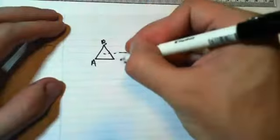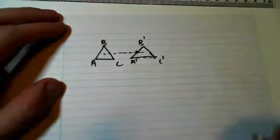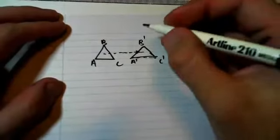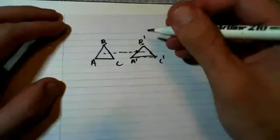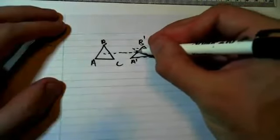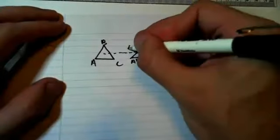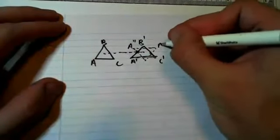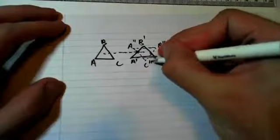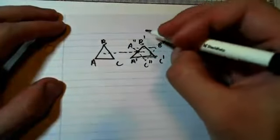So this is where this triangle A, B, C has moved, so A dash B dash C dash, it's moved to there and then it's going to rotate about its centre. We'll end up with A double dash B double dash and C double dash. So it's a combination of translation and rotation.